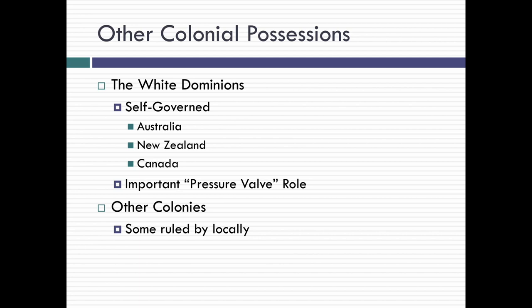There were other colonial possessions, sometimes called the White Dominions — largely self-governed areas dominated by white settlers, such as Australia, New Zealand, and Canada. They were important pressure valves; good places for Great Britain to send excess people and also prisoners. There were other colonies around the world, some ruled locally.